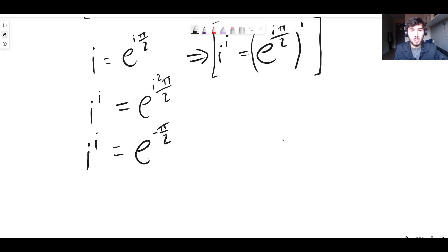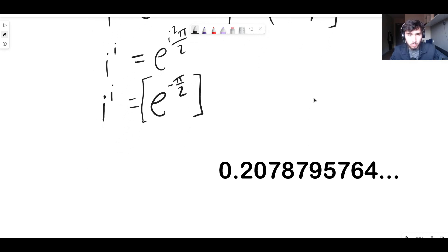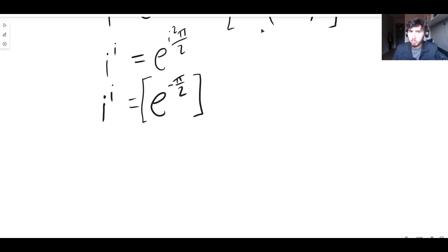And this is the value of i to the i. It's this. And I'll superimpose the decimal expansion on there right now, so you can see roughly what it is as a decimal. But this is the thing, this is what I find interesting about this result.